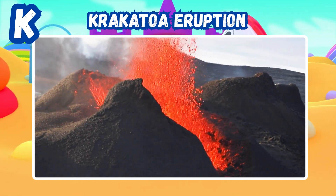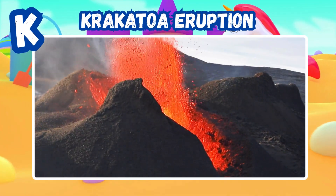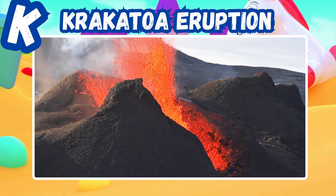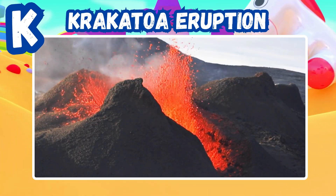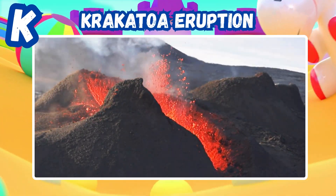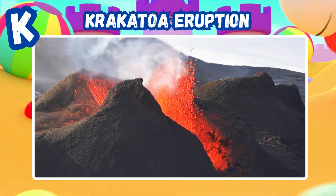K is for Krakatoa eruption. A historic volcanic explosion erupts. Ash clouds darken the sky for miles.